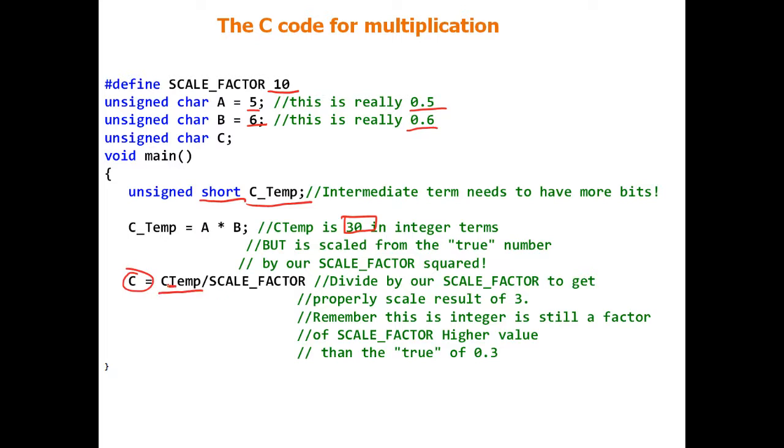But this number is scaled from the true number by our scale factor squared. So what do we do? We're just going to say C equals our temporary variable. There should be a little underscore in there. This is why it's pseudocode and not real code. Now, you think about if we divide it by our scale factor of 3, or I'm sorry, our scale factor of 10, the result of C is now 3. Well, and that makes sense because we still have a scale factor of 10 in front of our result, and that gives us a true value of 0.3. So it works. But the key is, if you want to get back to your original scaling factor, you have to rescale it with a division.